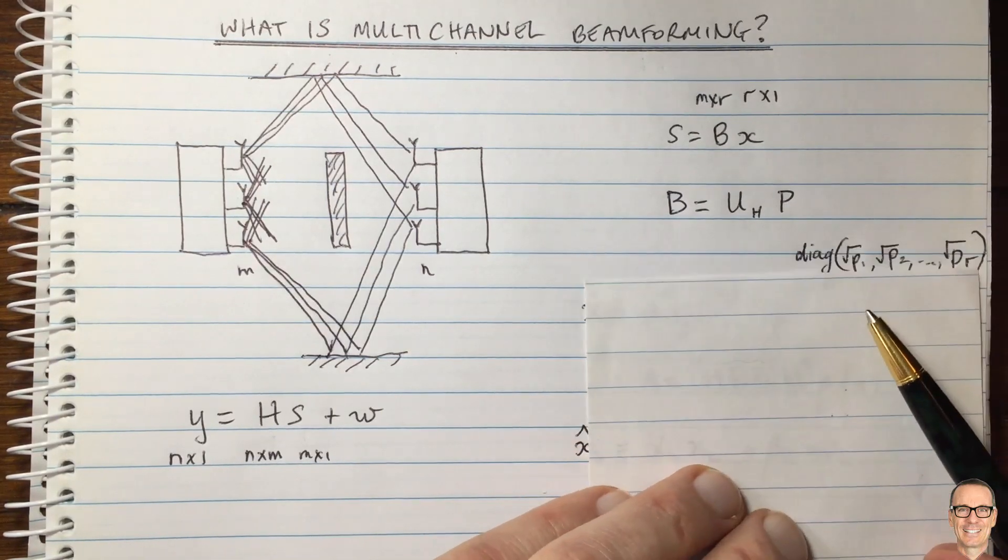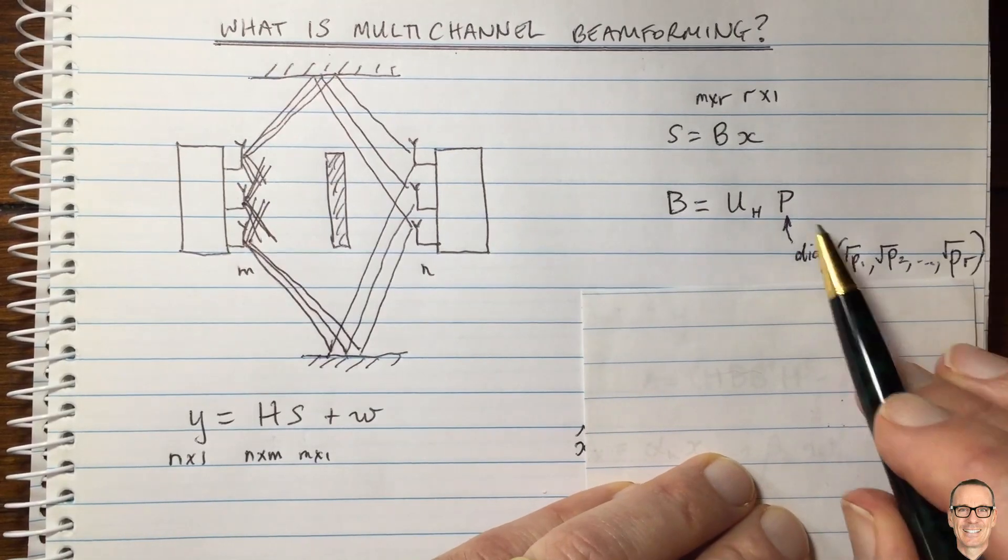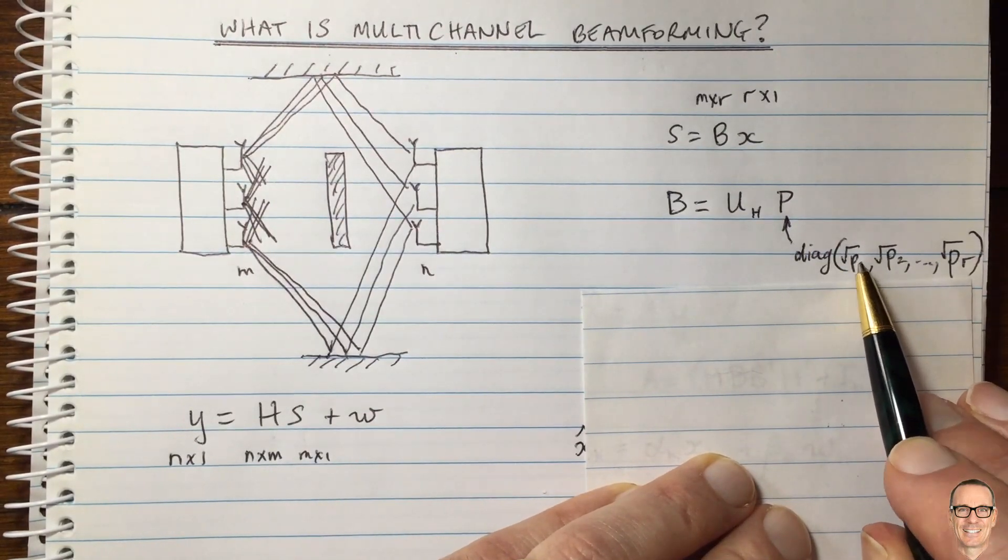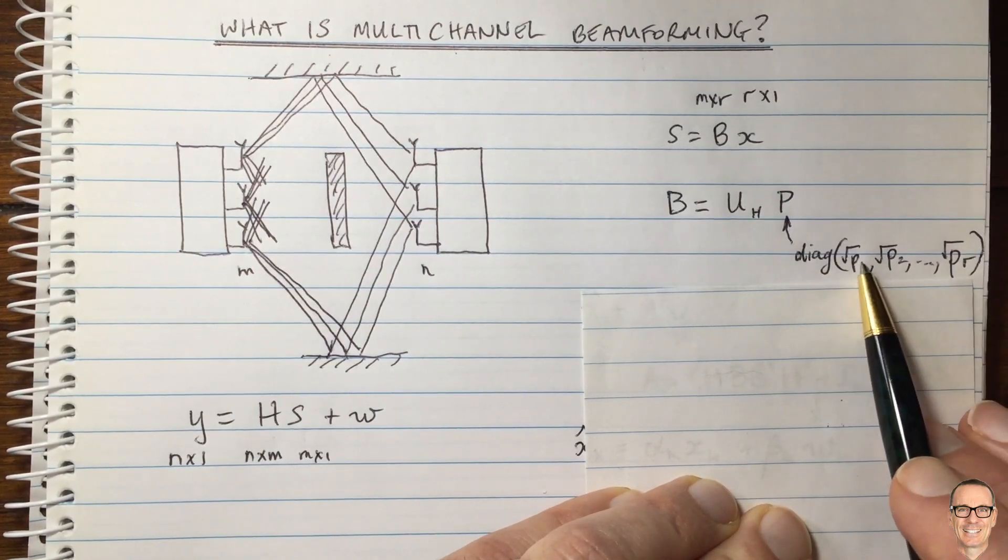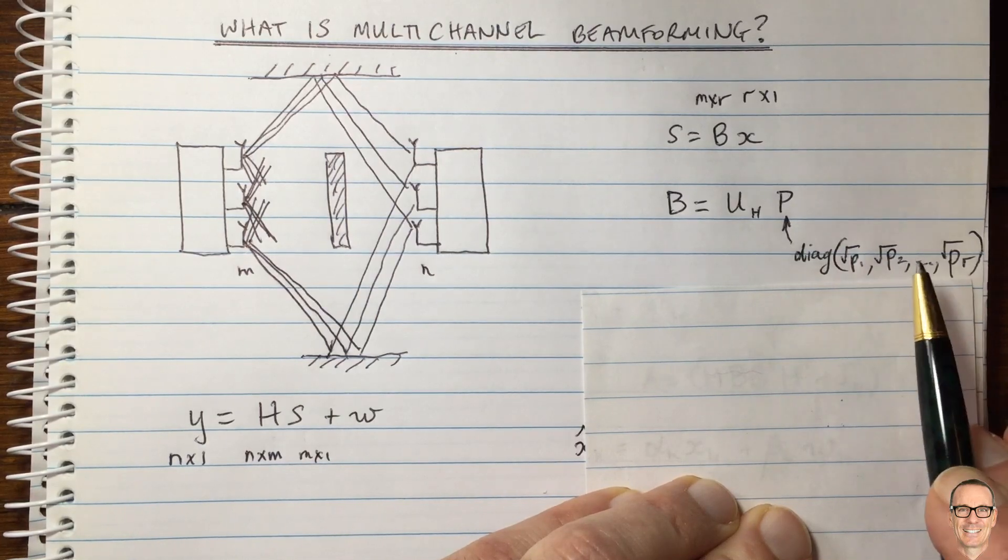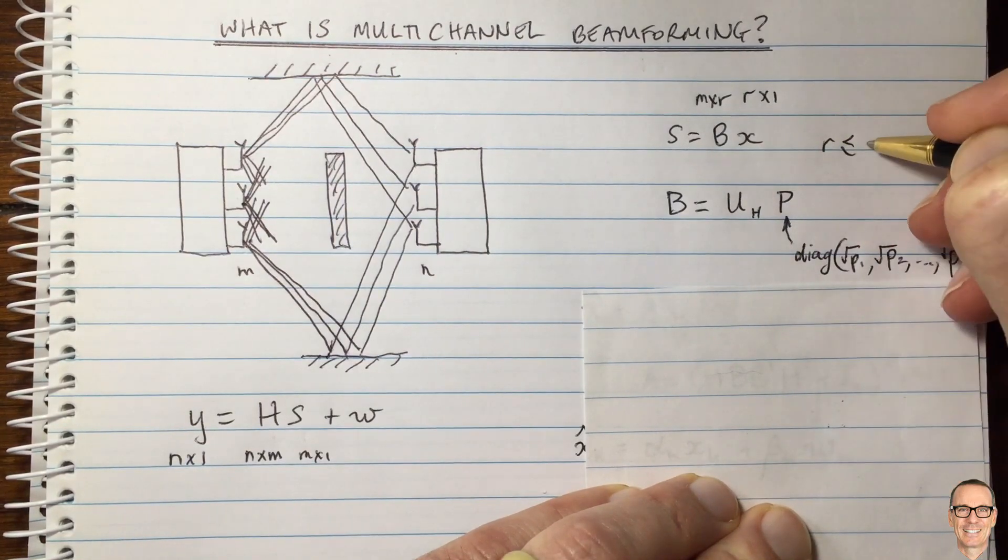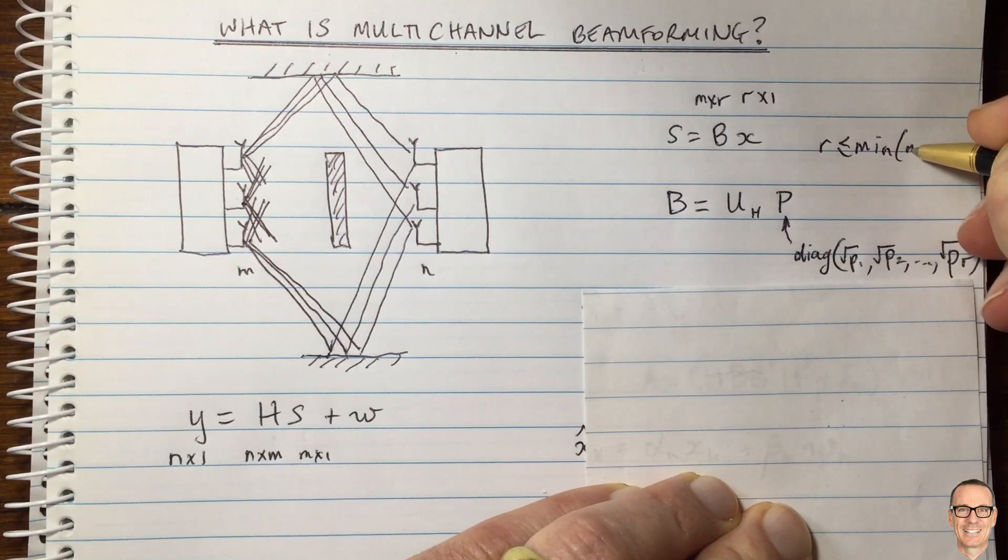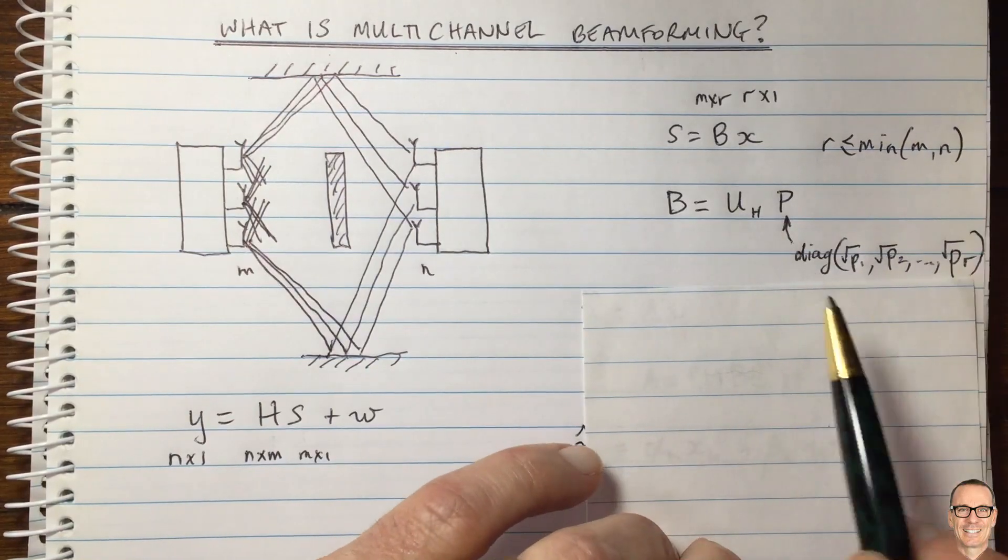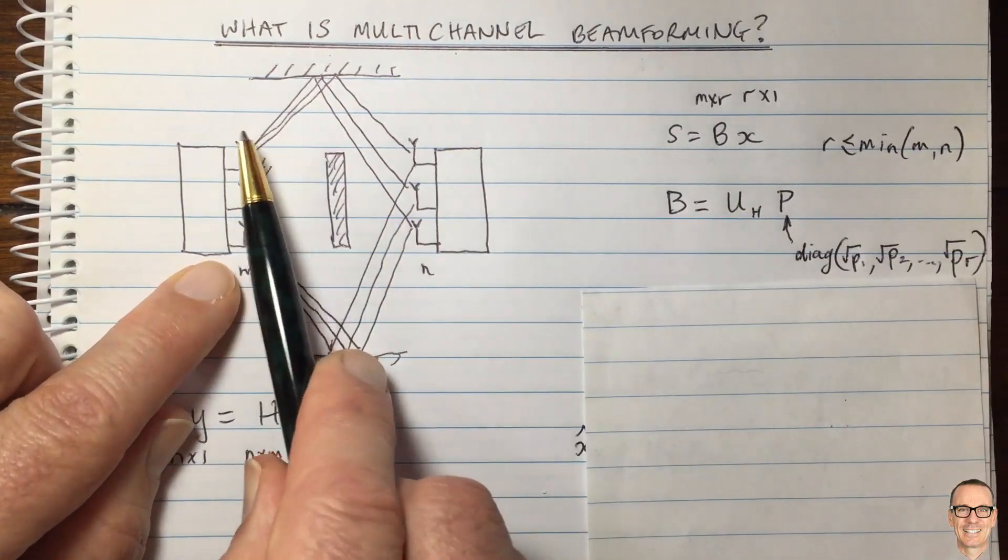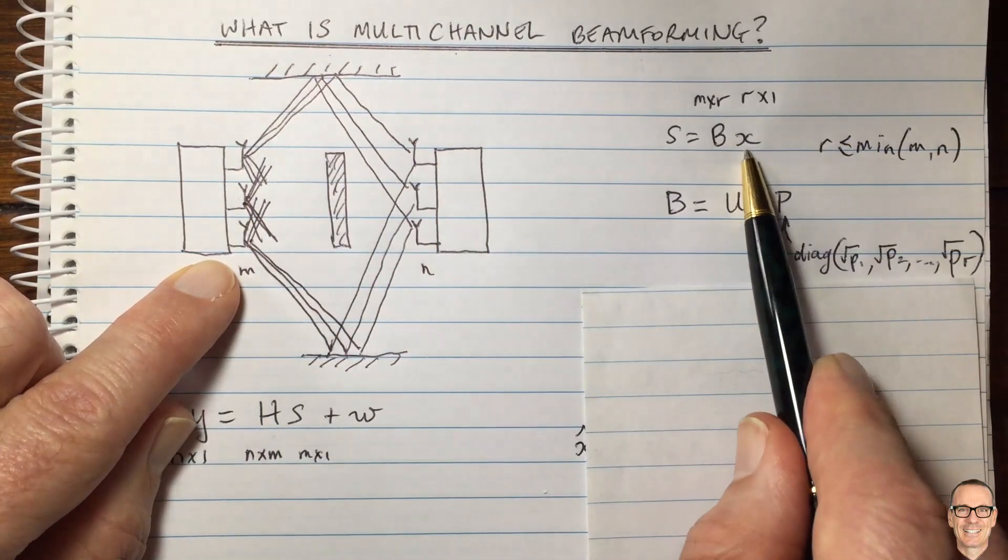Let's look at the power matrix first. The power matrix is a diagonal matrix where the elements on the diagonal are the square root of the powers for each of the different directions that we want to send in. So here, as we've said, we're choosing R. We've got the power for the first dimension, the second dimension, up to the rth dimension here. R has to be less than or equal to the minimum out of M and N. So we can have less than this, but we certainly can't have more than whatever is the minimum. And this is actually our degrees of freedom. Whichever end has the fewer number of antennas, that limits the number of data streams that we can send.